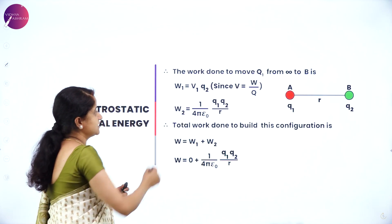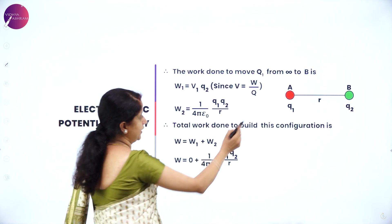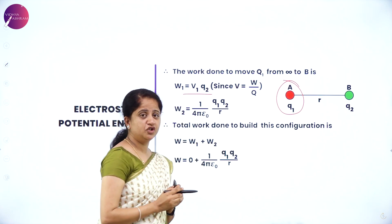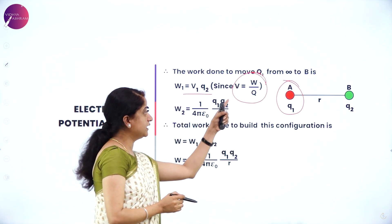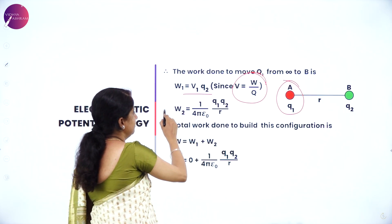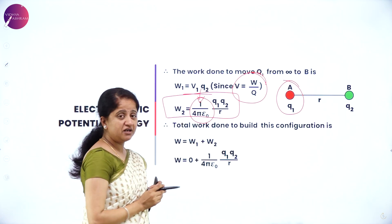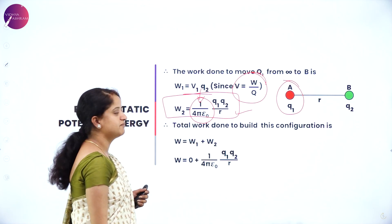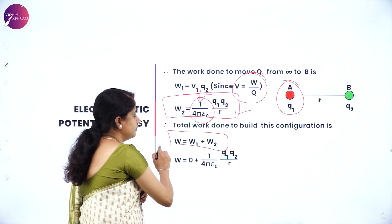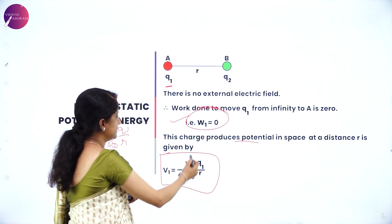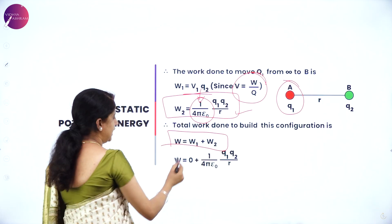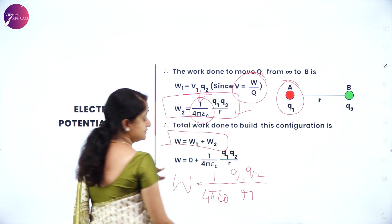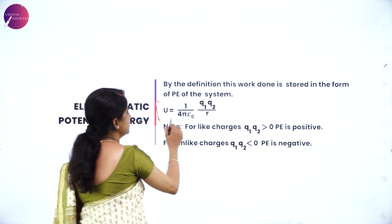Now we bring the other charge Q2 from infinity to point B. Now there is an external field due to Q1. The work done W2 = V1 × Q2. Substituting V1 = (1/4πε₀) Q1/R, we get W2 = (1/4πε₀) Q1Q2/R. The total work done is W1 + W2. Since W1 = 0 and W2 = (1/4πε₀) Q1Q2/R, the total work W = (1/4πε₀) Q1Q2/R.